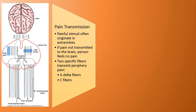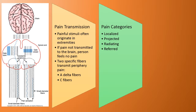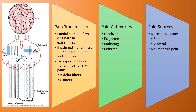Pain transmission involves a painful stimulus that often originates in the extremities. If pain is not transmitted to the brain, the person feels no pain. Two specific fibers transmit peripheral pain: A-delta fibers and C fibers. Pain categories include localized, projected, radiating, or referred. Pain sources include nociceptive pain — somatic or visceral — and neuropathic pain.